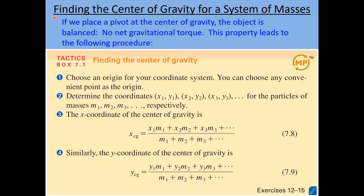Now that we have an idea of the concept of center of gravity, we sometimes need to calculate it quantitatively. Basically, the idea is that there is no net torque if you balance an object on the point where its CG is. Using that principle, one can derive the formulas for calculating the position of the center of gravity. The method is to first choose an origin for your coordinate system — you can choose any point, but some are more convenient than others.